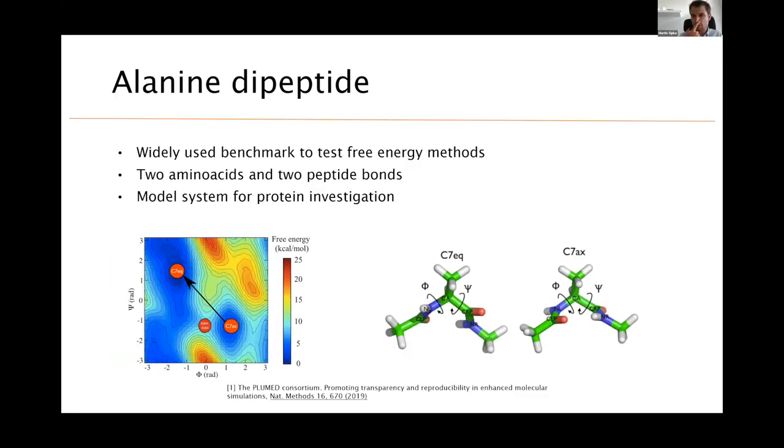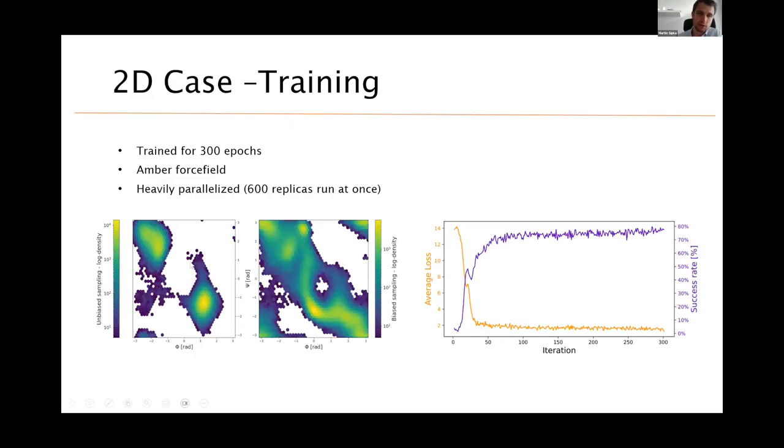Right. There is some more sophisticated test case, a standard benchmark for every method that comes into this world of enhanced sampling. You need to run on alanine dipeptide. Like if your method doesn't work on alanine dipeptide, then it's not worth publishing, but we were able to get it running. We were able to get the nice sampling, which initially was just along the minima. And after a couple of episodes, we got nice sampling between these two minima that we wanted to sample.